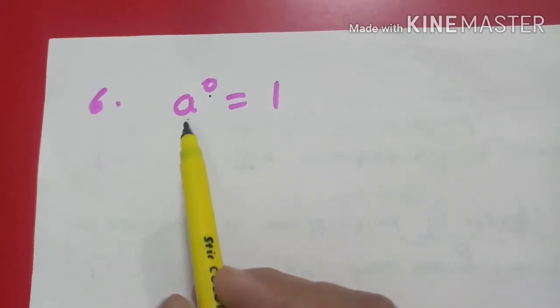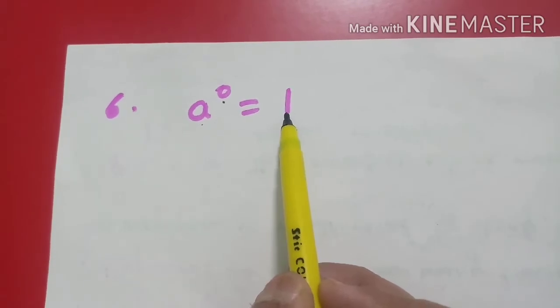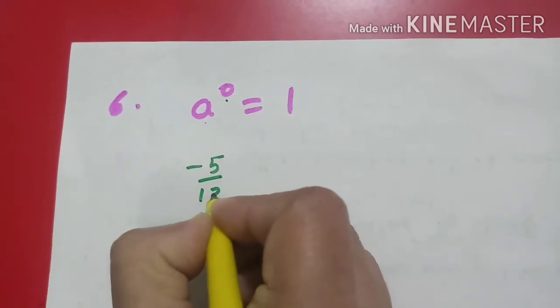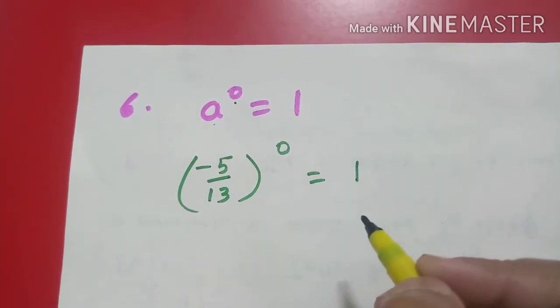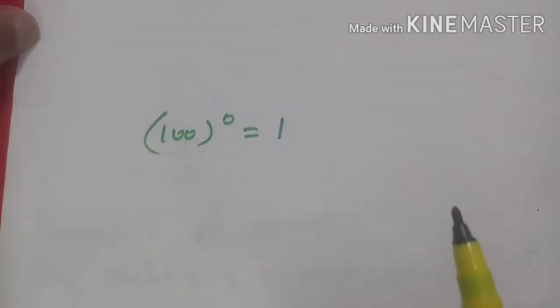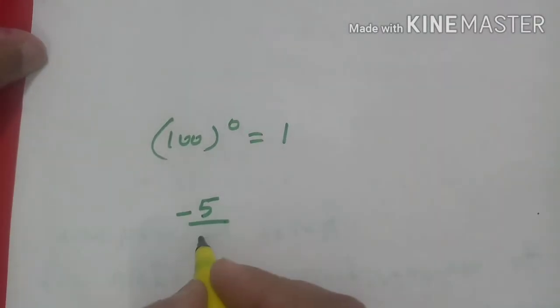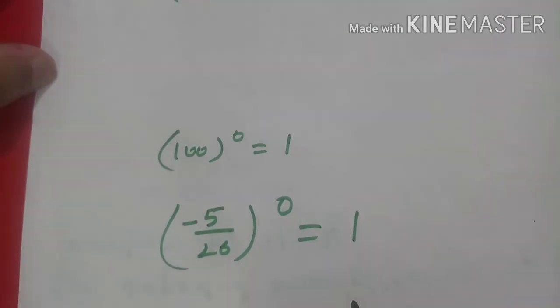The sixth law says if any number is raised to the power 0, then that equals 1. Suppose I have any number, like (-5/30)⁰. Then its value will be 1. If 100⁰, then its value is 1. So whenever any number is raised to 0, it equals 1.